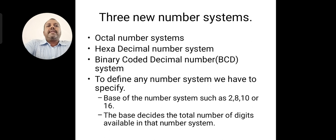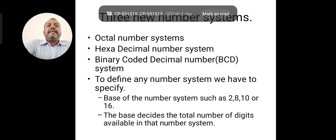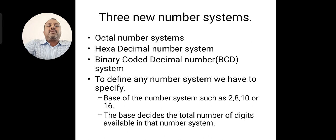Here, we have to focus on the base value or radix value. For example, if it is a binary number system, the base or radix value is 2. For the octal number system, the base or radix value is 8 — that is, 0 to 7, totally 8 values. For the decimal number system, 10 different types of symbols are used, that is 0 to 9. And finally, hexadecimal has a radix value of 16, because 16 different types of symbols are used.